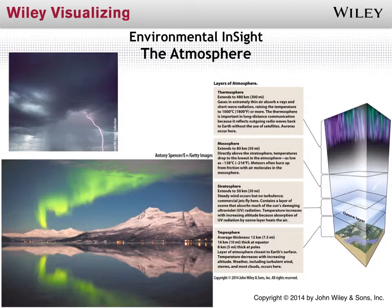The mesosphere is above the stratosphere. The thermosphere extends all the way up to 300 miles above the surface of the Earth. One interesting thing about the thermosphere is that it's where the aurora borealis — the northern lights — occurs, which some of us have been fortunate enough to see.